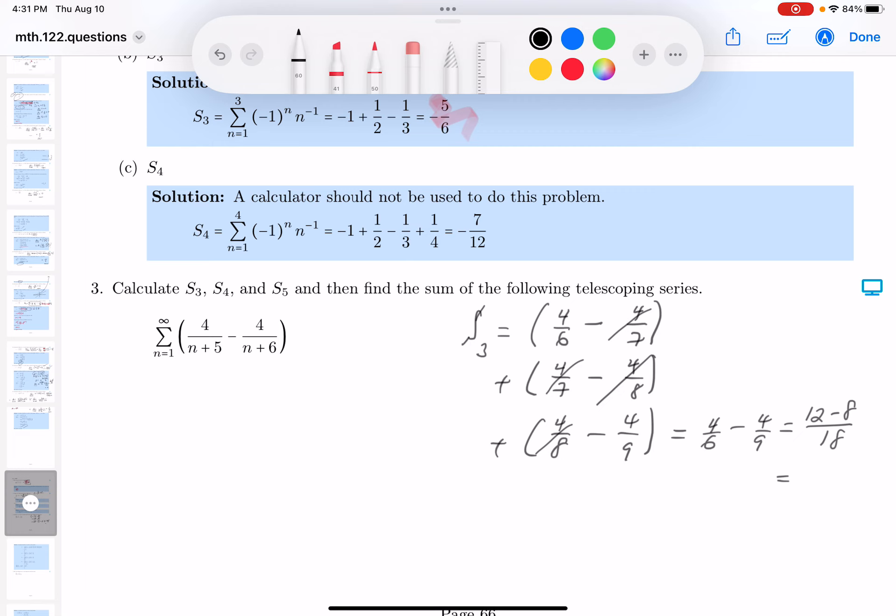Well, 12 minus 18 is going to be, I'm sorry, 12 minus 8 is 4. Eighteenths or two ninths. All right, so that's S3.